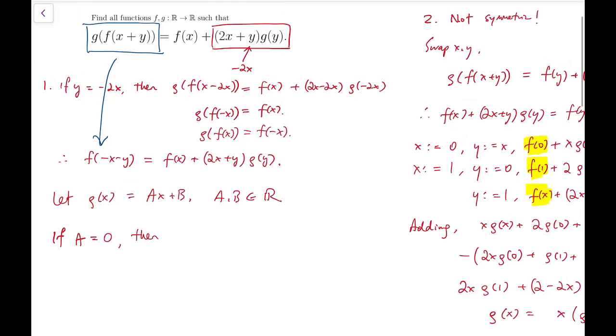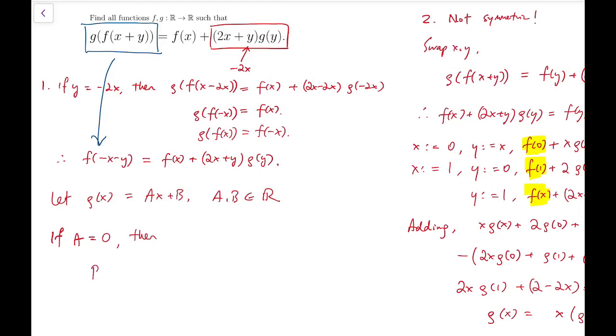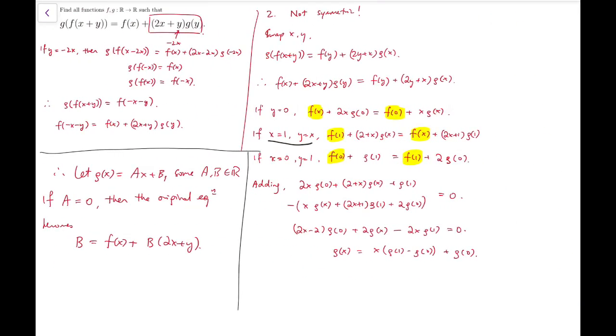If a equals 0, then the original equation becomes b = f(x) + (2x+y)b. But that is quite ridiculous, because f(x) can be written in terms of y. The only possibility for that to continue is that b can only be 0. So g identically vanishes, and similarly, f will identically vanish as well. That's the first case.